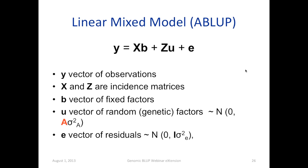We use linear mixed models to estimate breeding values of individuals, using phenotype and pedigrees. In the mixed model, we have a vector of observations, and X and Z incidence matrices. X is associated with the fixed factor b, and Z is the incidence matrix for the random effects. And then we have an error term.